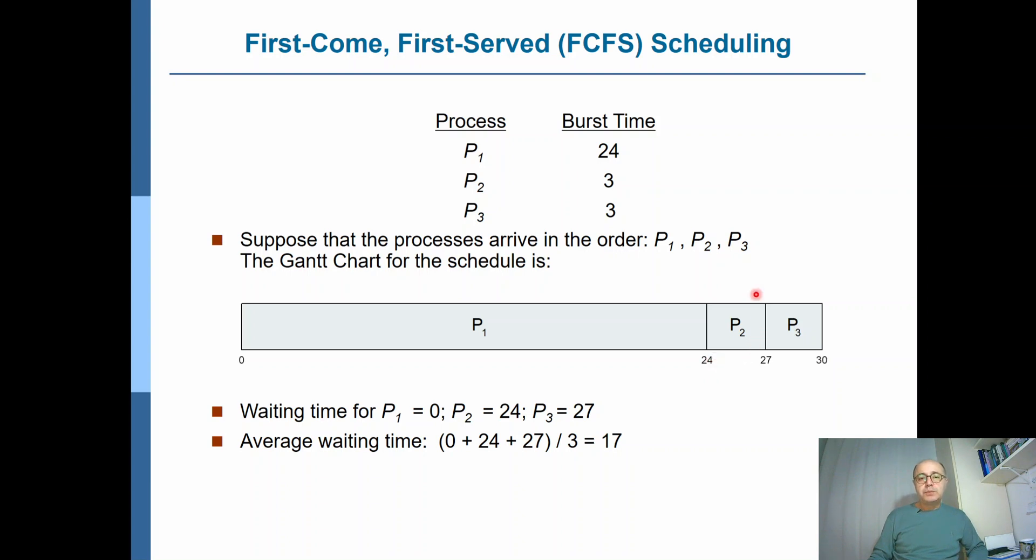At 24, P1 completes and the scheduler, FCFS scheduler, now decides to put P2 into the CPU. Now of course when the scheduler makes this decision, it takes some time for the dispatcher to dispatch - that means due to context switch from P1 to P2. Remember the dispatch latency - here in this example, again for the sake of simplicity, we are assuming that dispatch latency is simply zero, it's so small. So when P2 completes, then it will schedule P3.